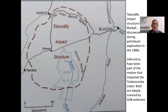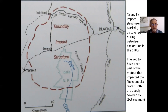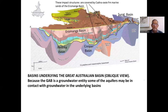There is yet another one, the Tallandilly structure near Blackall. It's less well defined by drilling, but clearly a similar impact occurred at the same time in the lower part of the Cadnawi Formation. These are really interesting structures, quite large scale — this one is about 90 kilometres across. It was discovered during petroleum exploration in the 1980s and is inferred to be the same impact event as the Tookoonooka crater. Both are deeply covered by the Eromanga Basin.